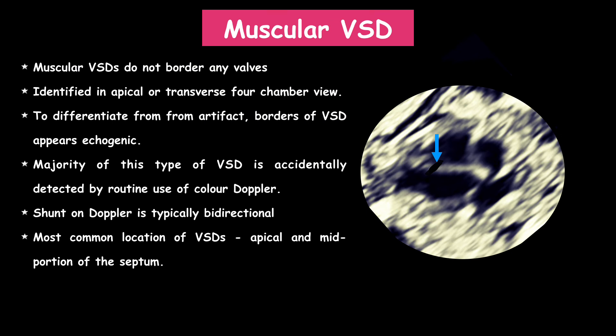Now let's see the last type: muscular VSD. These do not have any valves as their borders. They can be identified in the apical and transverse four-chamber views. To differentiate from artifact, the borders of the VSD will generally appear echogenic. The majority of the time, this type of VSD is accidentally detected by routine use of color Doppler. The shunt on Doppler is typically bidirectional. The most common locations are apical and in the mid portion of the septum.